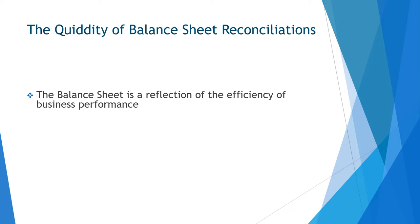The balance sheet is a reflection of the efficiency of business performance and shows the current financial position of the business, effectively showing how much money would be left over if all assets were sold and all debts were paid. It differs from the profit and loss statement, which reflects the financial performance of the business over a period of time.